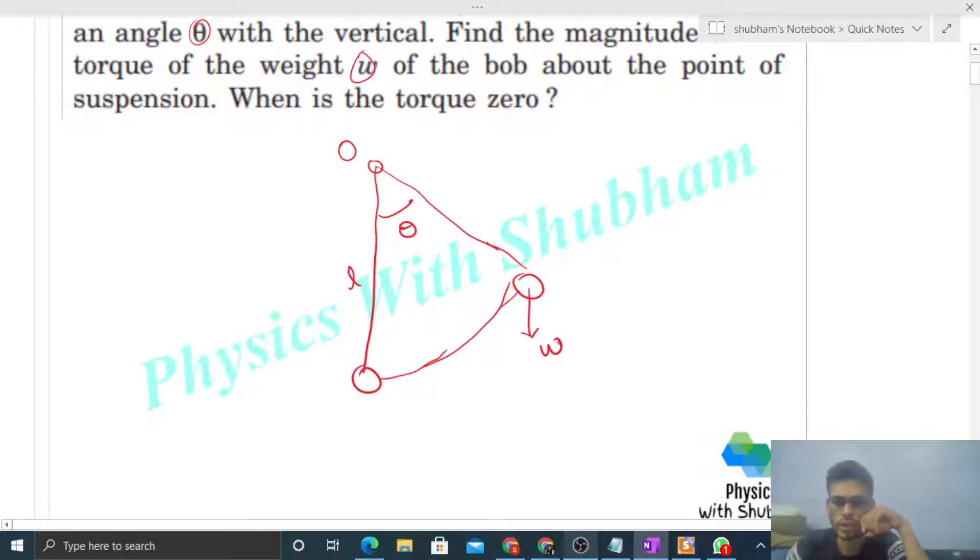So what is torque? Torque is nothing but r cross F, right? Torque is a vector quantity, so magnitude and direction both we have to discuss. First, let's discuss magnitude. That will be r ka magnitude, F ka magnitude, into sine of let's say alpha. Alpha is the angle between r and F. Theta is already taken, right, so let's define alpha.